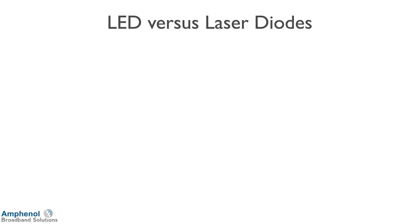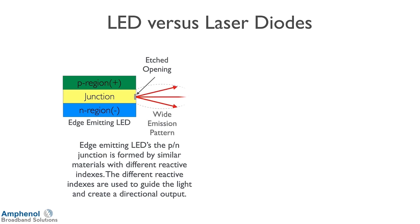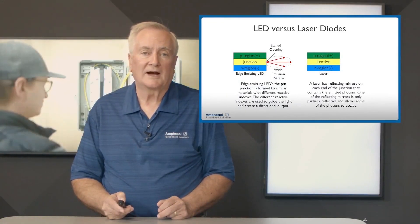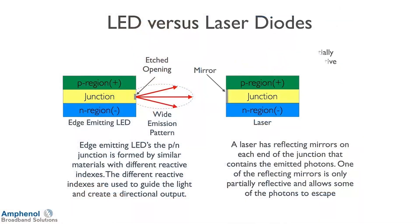Let's look at the difference between an LED versus a laser diode. For edge-emitting LEDs, the P-N junction is formed by similar materials with different refractive indexes, which guide the light and create a directional output. There's an etched opening in the junction that allows the light to escape, giving a wide emission pattern. With the laser, we use mirrors — one on each side of the junction. On one side, the mirror is partially reflective, which allows the light to escape, producing a very narrow emission pattern and high power.